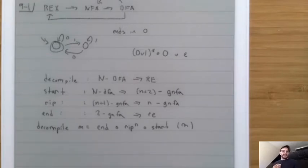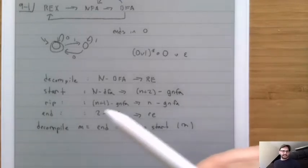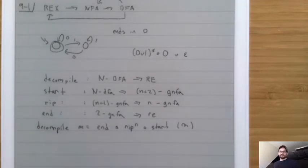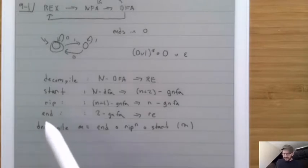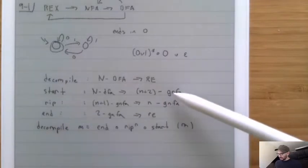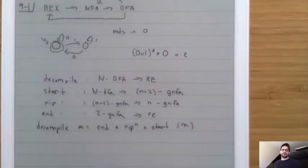We now know what all the pieces in play are. I need to tell you what a GNFA is, what start does, what rip does, and what end does. I think the easiest way to explain this is to first talk about what end does, then talk about GNFAs, then start, and then go back to rip.